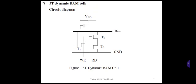The gate capacitance CG actually stores the data. If you want to write a 1, that data is placed on the bus line, which brings it through transistor T1, and the gate capacitance CG gets charged. If the bus line is 0, the capacitor charge level is 0. This is how the data is written.